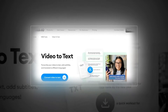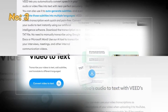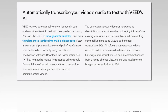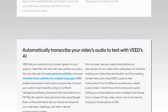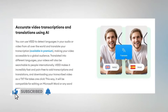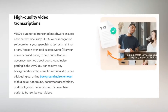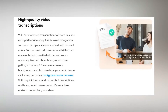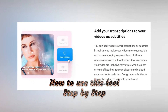Veed is a powerful online tool for transcribing video into text, adding subtitles, and more. This web-based application allows you to transcribe YouTube videos into text. One of the notable features is that it supports over 100 languages, which makes it versatile software for transcribing videos in various languages. Let me tell you step-by-step how to use this tool.